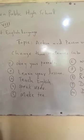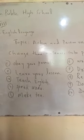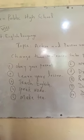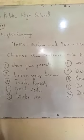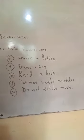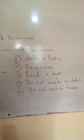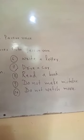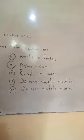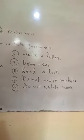Let me repeat the sentences. First: Obey your parents. Second: Learn your lesson. Third: Teach English. Fourth: Speak the truth. Fifth: Make peace. Sixth: Write a letter. Seventh: Drive a car. Eighth: Read a book. Ninth: Do not make mistakes. Tenth: Do not watch movies.